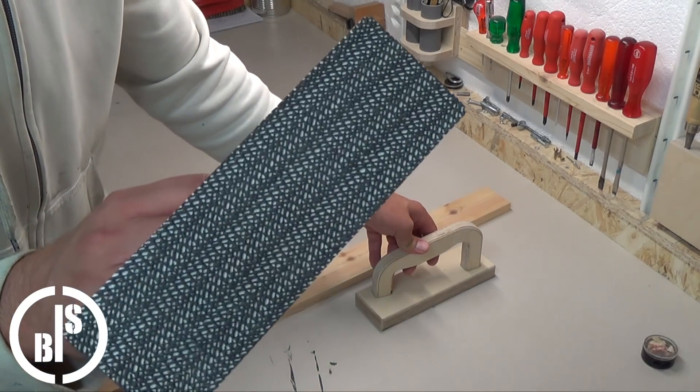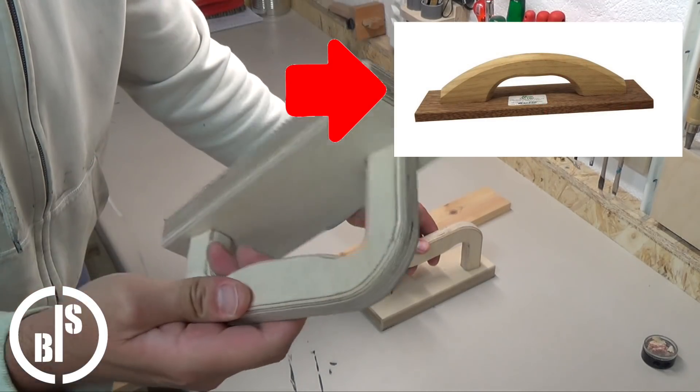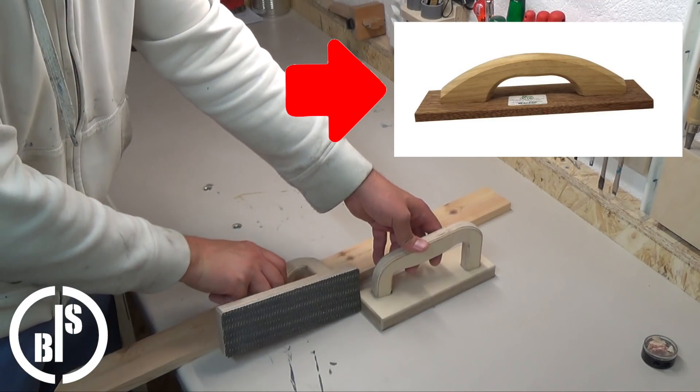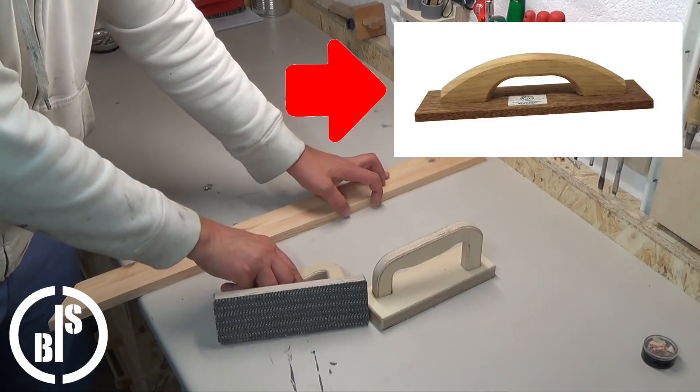You can also use a wooden hand float like this and just attach a piece of anti-slip mat to it. That's the easy way.